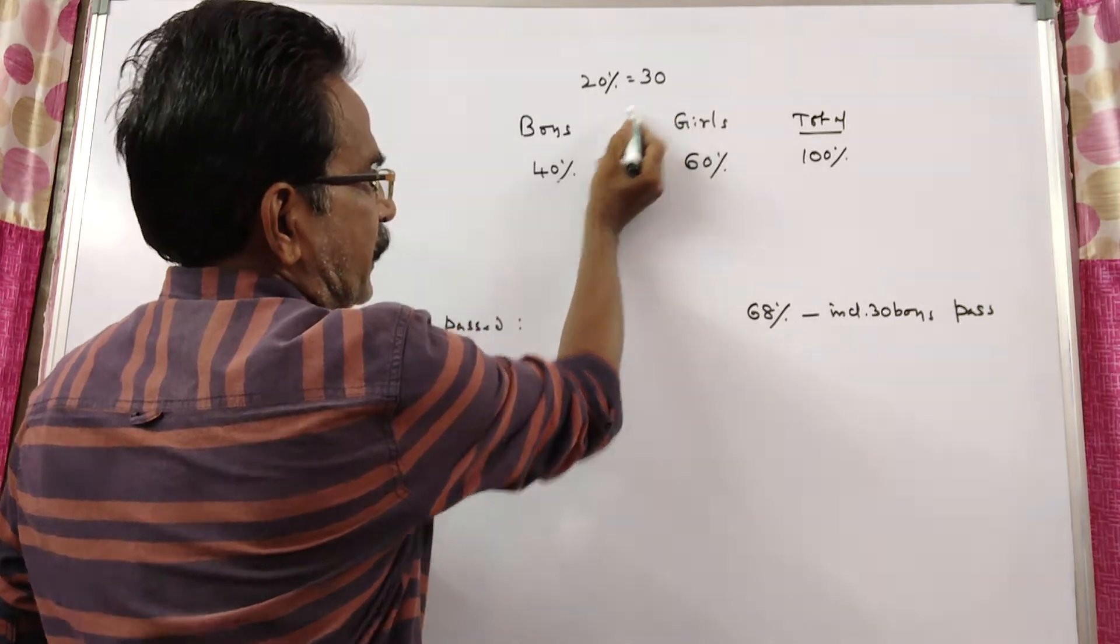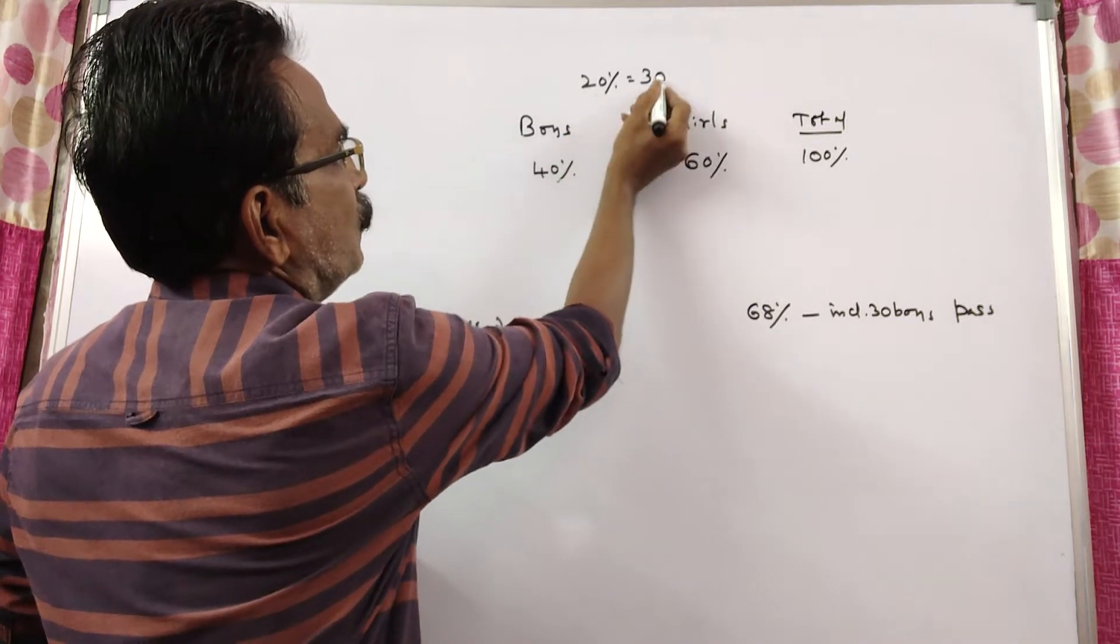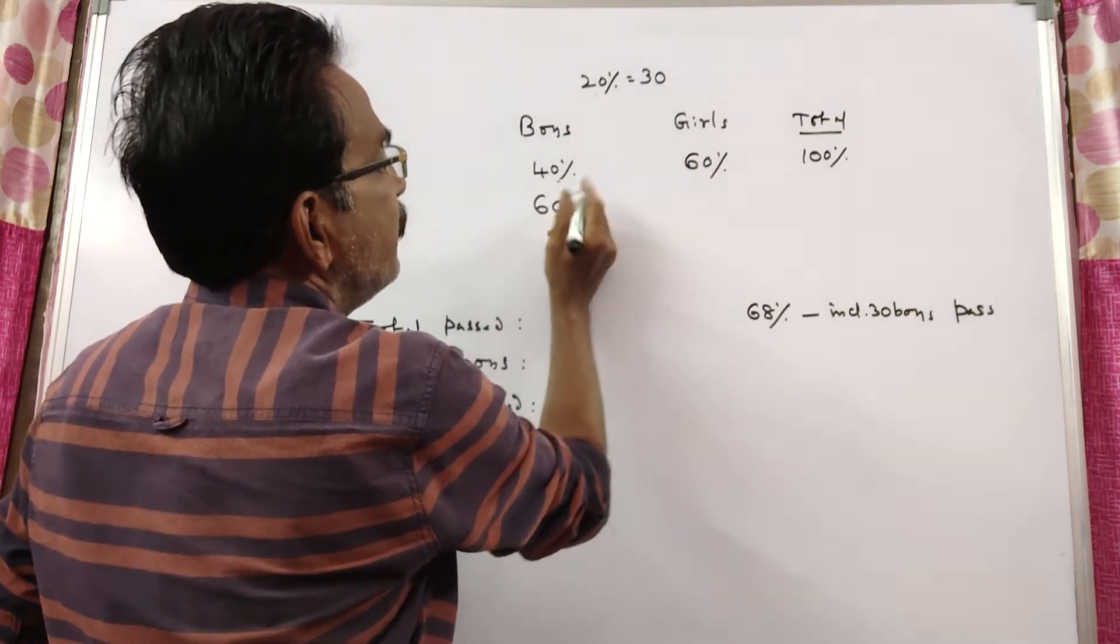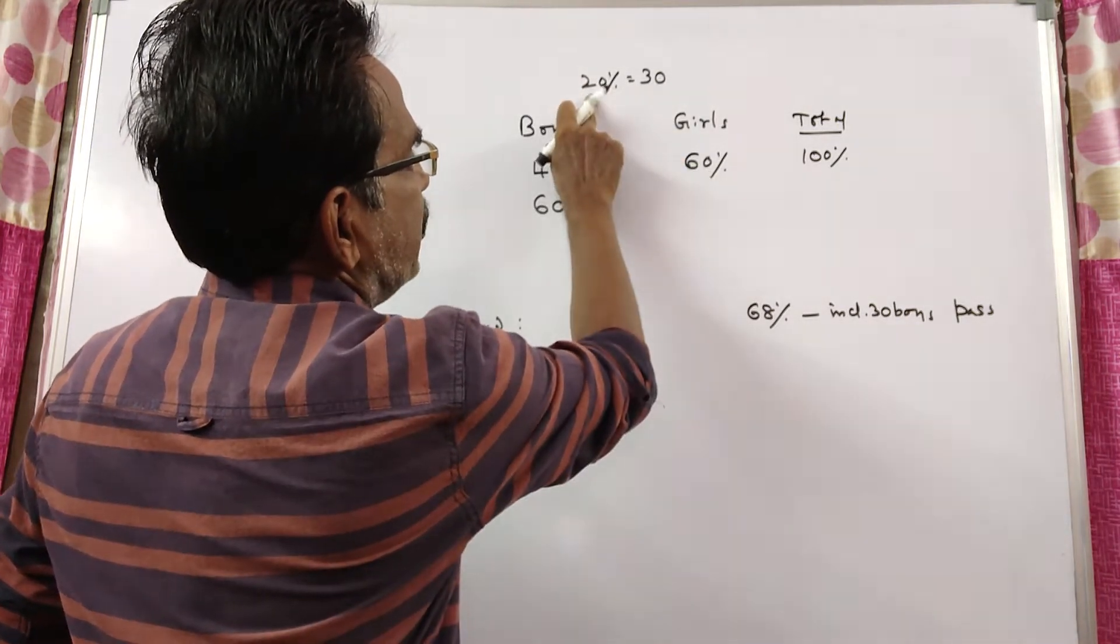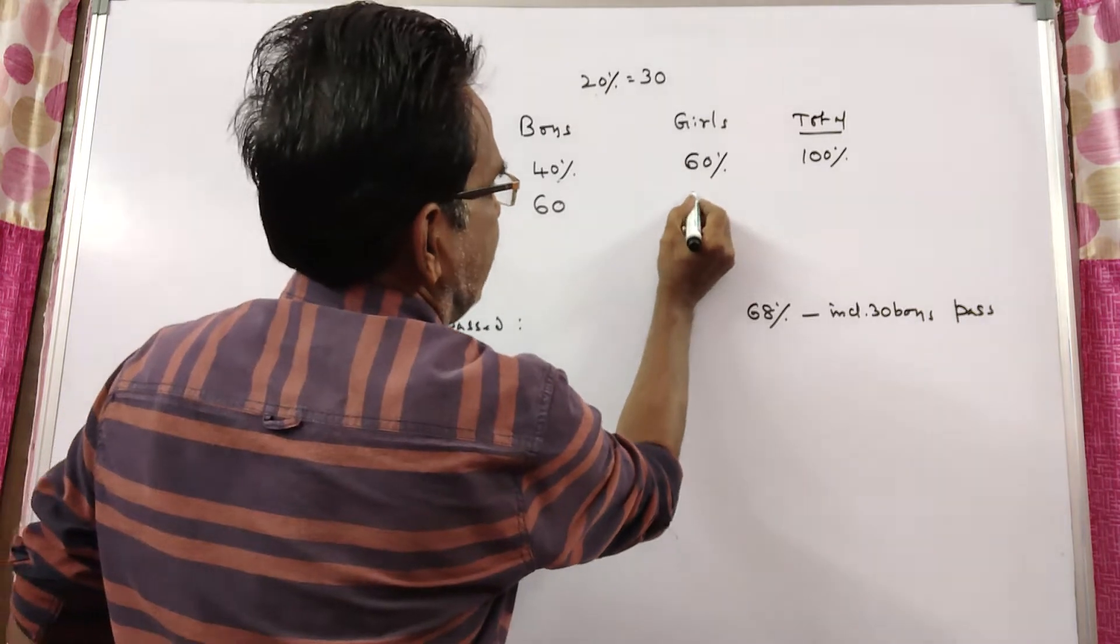20 percent is equal to 30 means 40 percent is equal to 60. 20 percent is equal to 30 means 60 percent, 3×30 is 90.